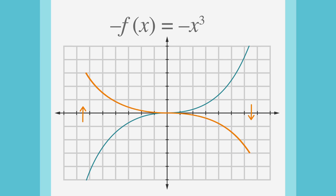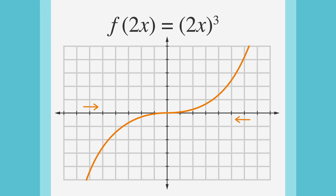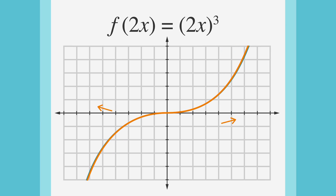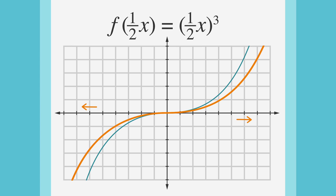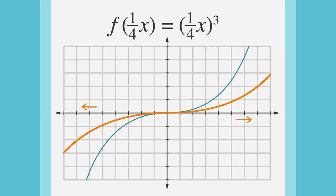We can manipulate the graph in other ways too. We can stretch or compress the graph horizontally by adjusting the coefficient in front of the x. To compress the function horizontally, we can multiply the x values by a number bigger than 1. To stretch the function horizontally, we can multiply the x values by a number between 0 and 1, like 1 half. This will have the effect of stretching the function outward horizontally. As we make the fraction smaller, the graph will stretch even more — multiplying the values of x by 1 fourth, the graph gets even wider.